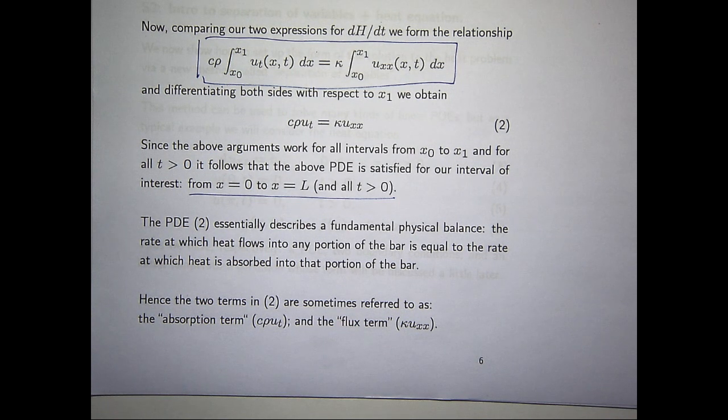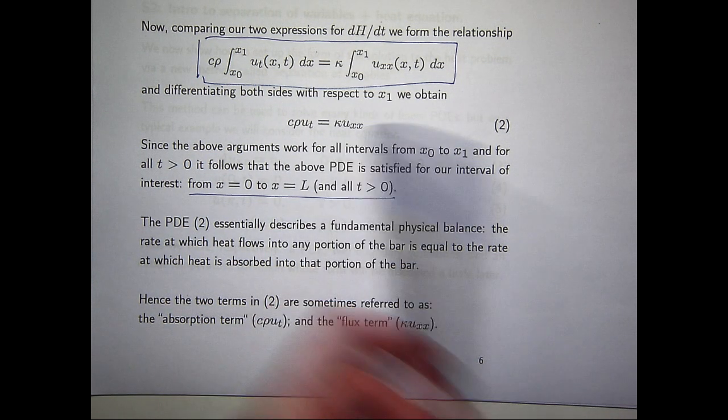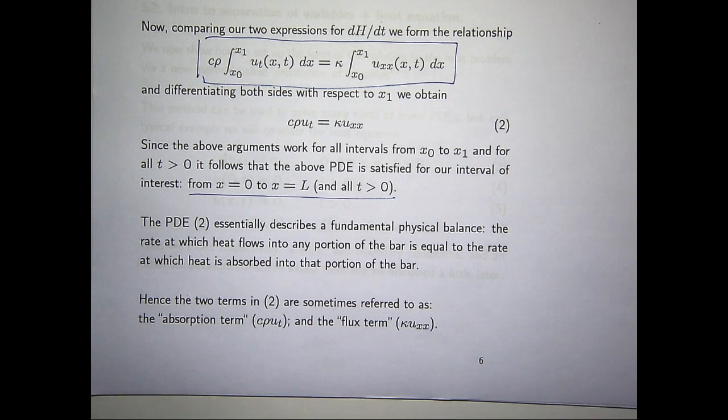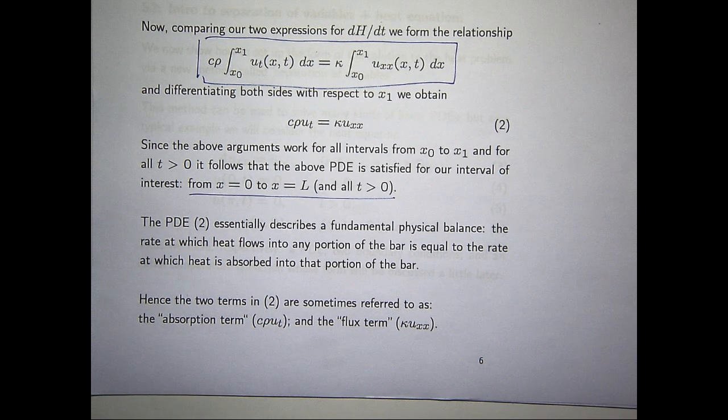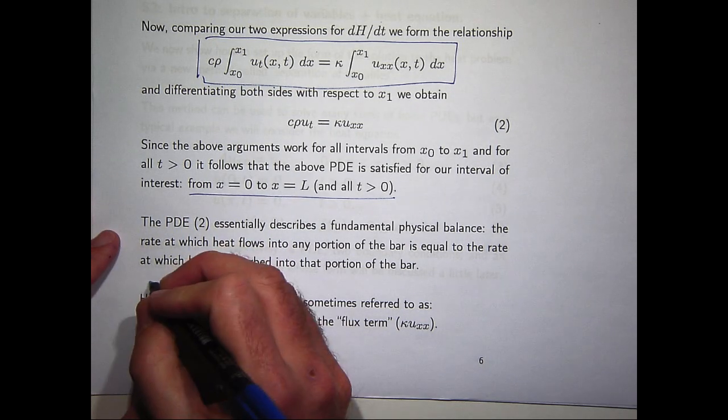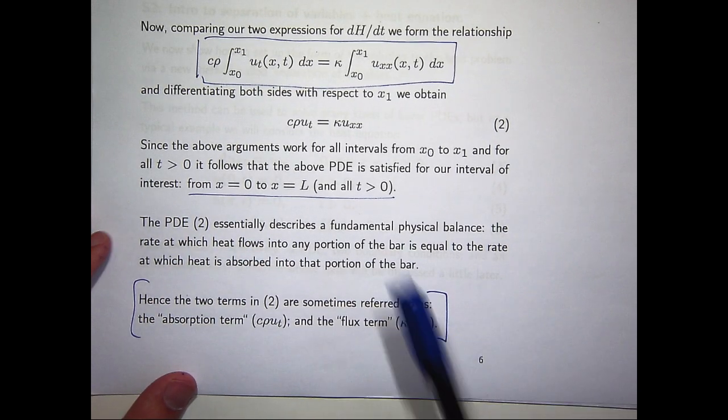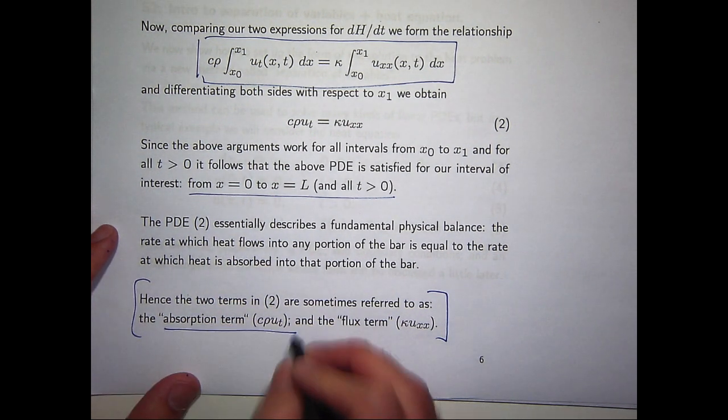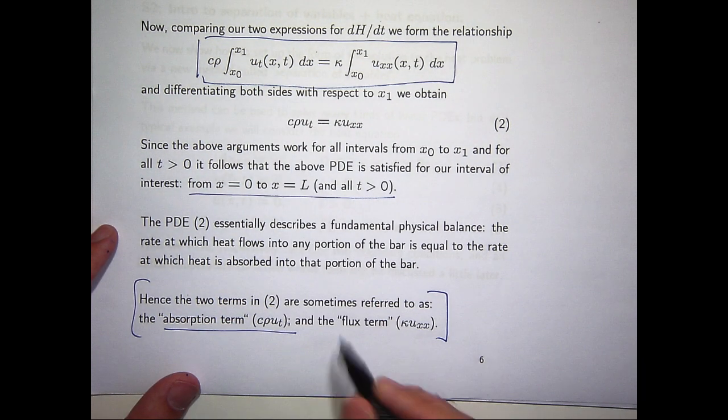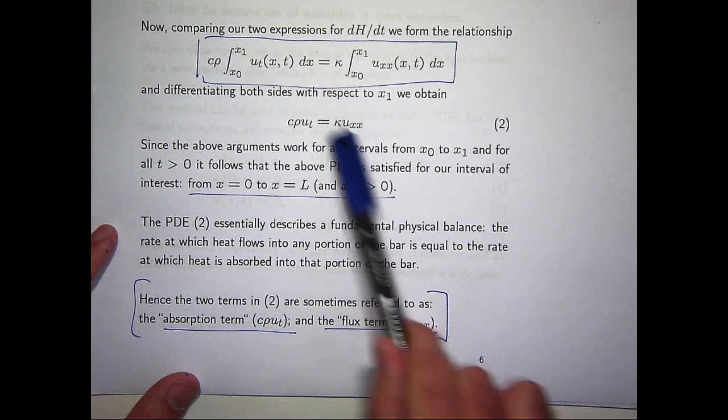Well, the PDE2 essentially describes some sort of physical balance. The rate at which heat flows into any portion of the bar is equal to the rate at which heat is absorbed into that portion of the bar. And, as a result, the two terms in this PDE2 are sometimes referred to as the absorption term, this one here, and the flux term, this one here.